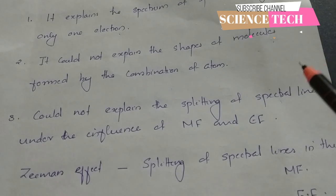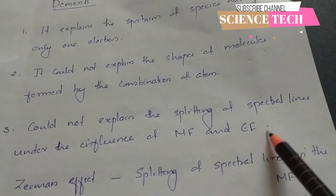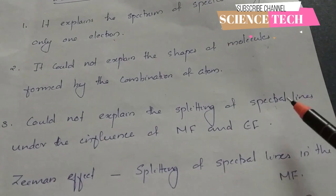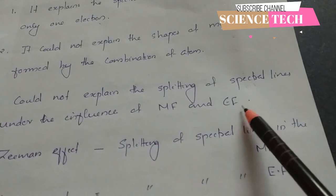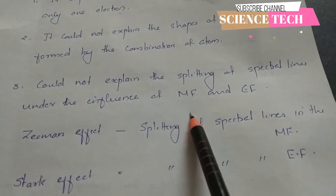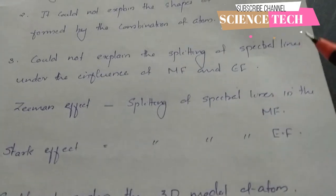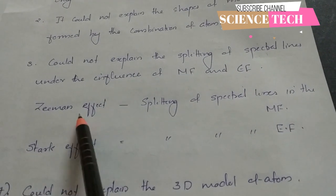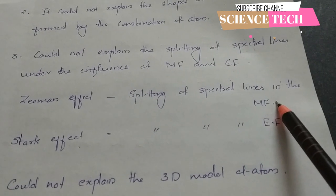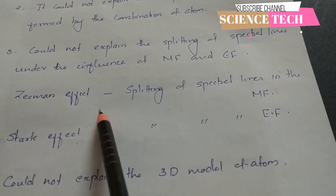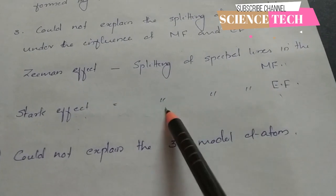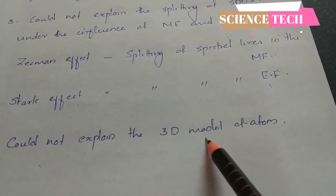Spectral lines are formed when an electron gains energy and moves to a higher orbit, then emits radiation returning to a lower state. The Bohr model cannot explain the Zeeman effect — splitting of spectral lines in a magnetic field — or the Stark effect — splitting in an electric field.